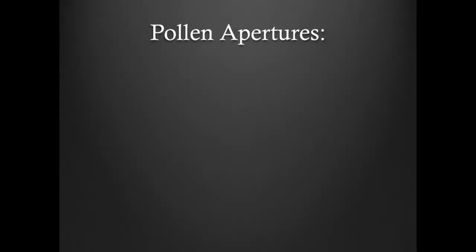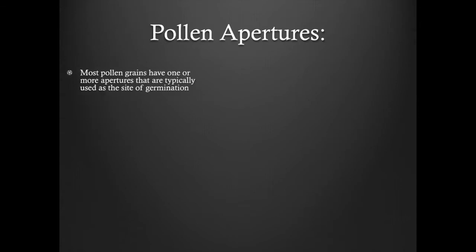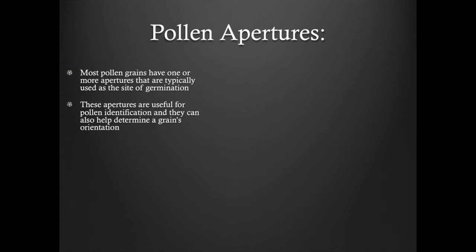An aperture is an area on the pollen wall that appears morphologically different from the rest of the surface of the grain. Pollen grains typically have one or more apertures. These apertures function as the site of germination on the pollen grain and also provide useful morphologic information for pollen identification. The position of the aperture on a grain can help the user determine whether a grain is in its polar or equatorial orientation.